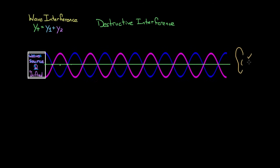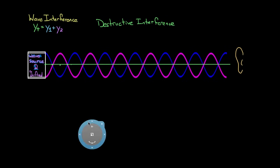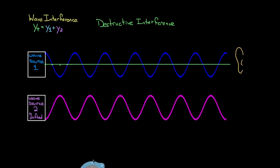They're not perfectly, totally destructive, but the waves drawn here are totally destructive. If they perfectly cancel, we'd call that total destructive interference, or perfectly destructive interference. It happens because the wave sent in was pi-shifted compared to the first wave.